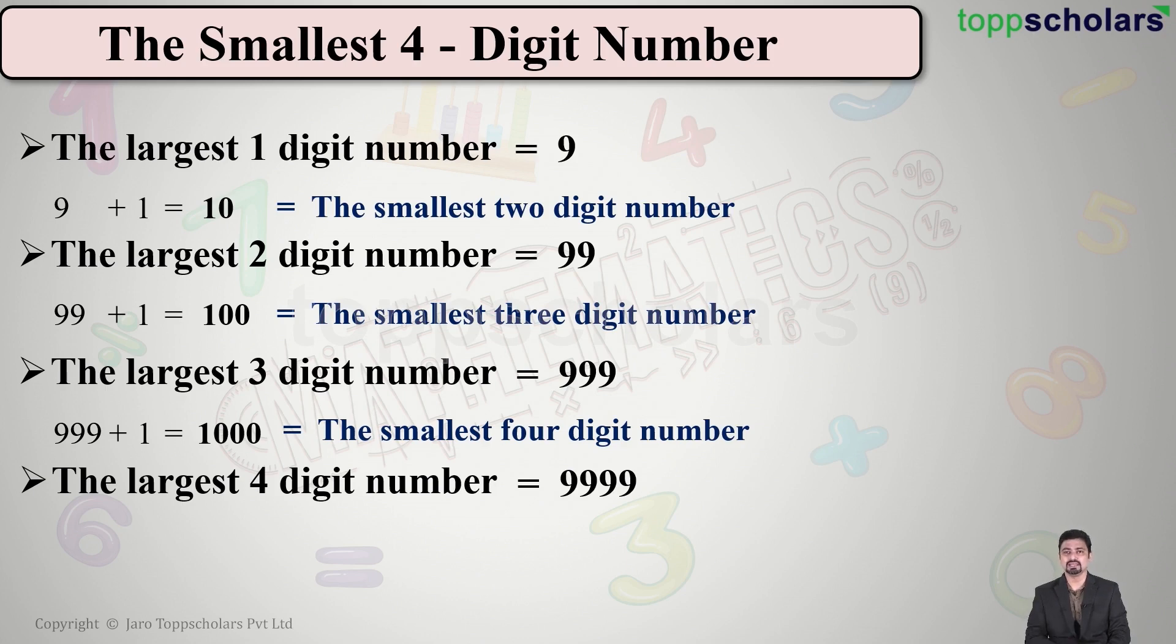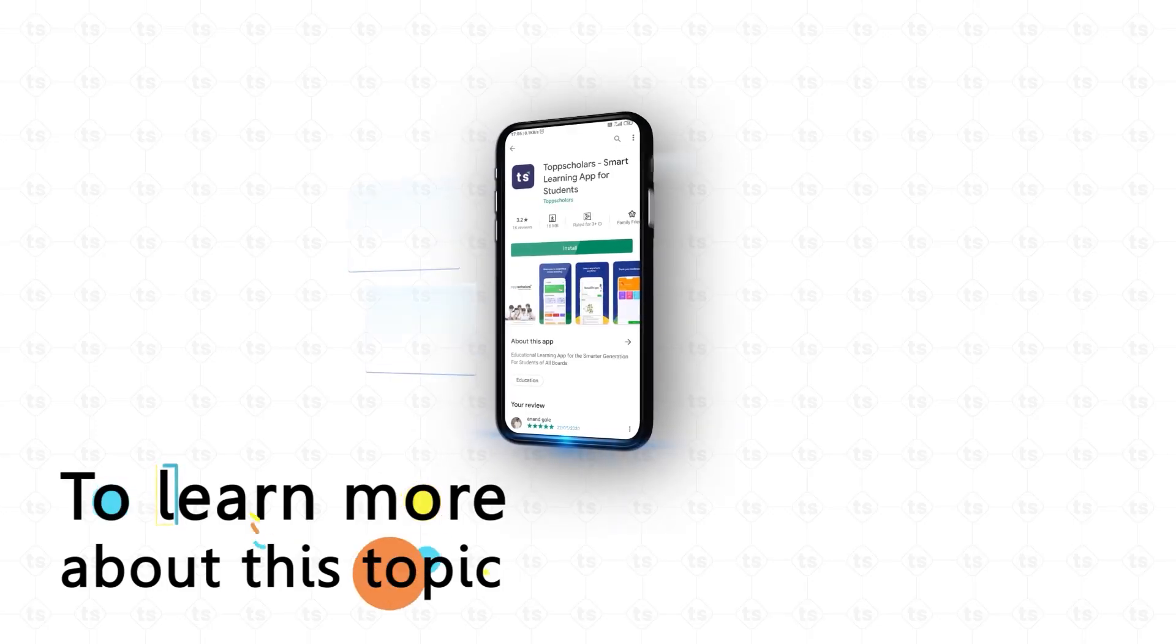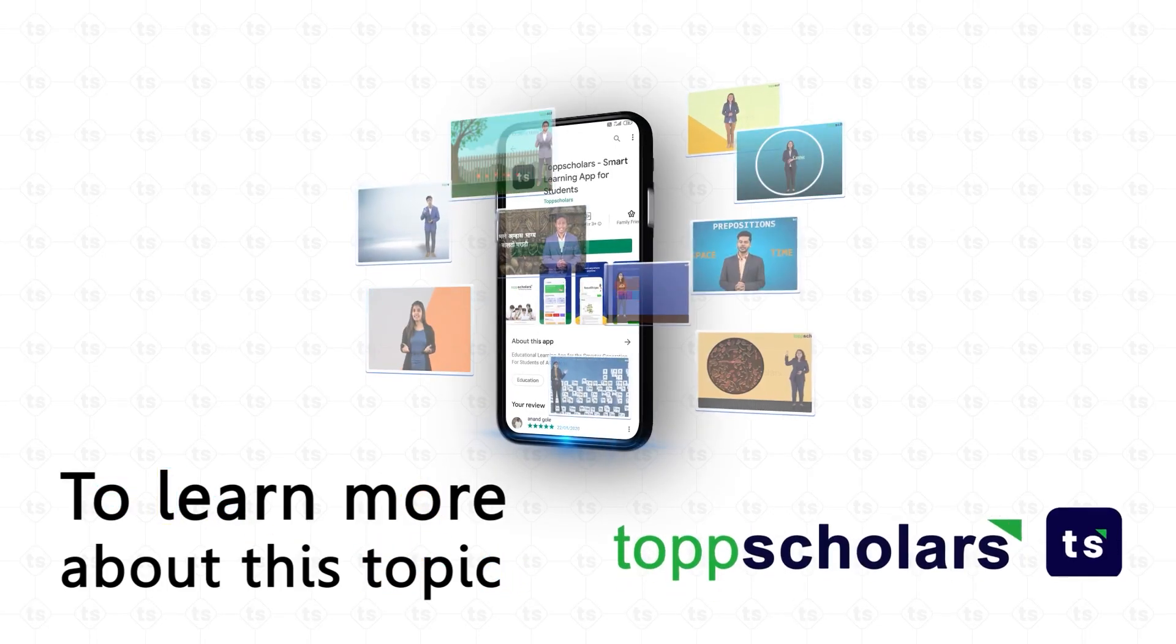I will tell you how to read it: It is nine thousand nine hundred and ninety-nine. To learn more about this topic, download Top Scholars app.